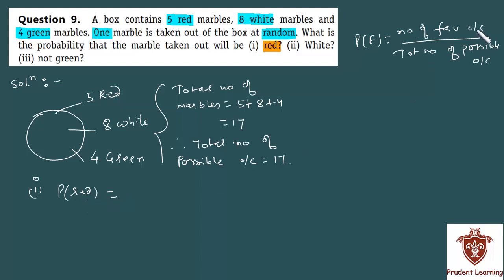Now, again, formula, number of favorable outcomes. The red marbles available in this box, that is your number of favorable outcomes. So, number of favorable outcomes is 5 over total number of possible outcomes.